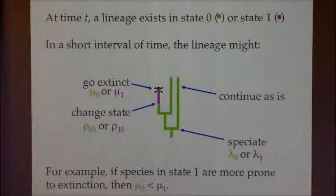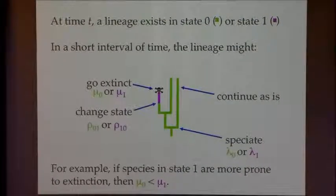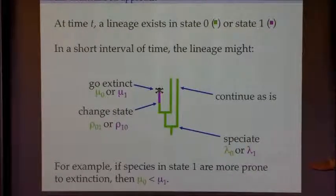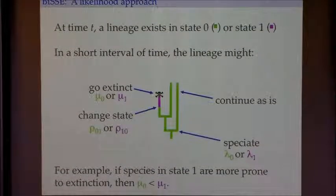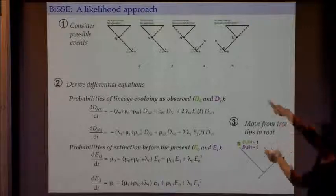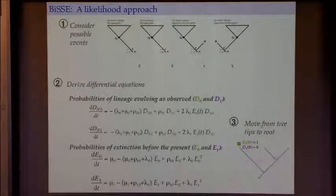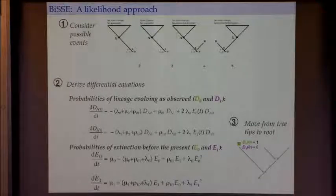The goal is: if we can compute a likelihood of seeing our data — the phylogeny as well as the tip states — then we can estimate parameters like whether the extinction rates differ for the two traits, or whether the speciation rates differ. Rather than just saying take my word for it, I think it's instructive to see how we derive these likelihoods. So I'm going to go to the board.